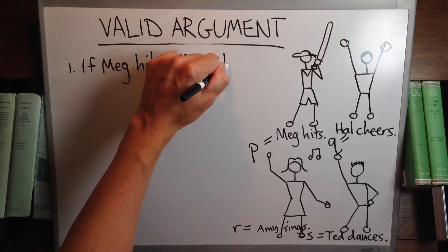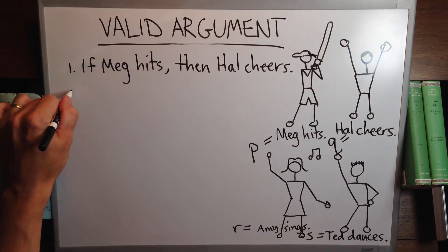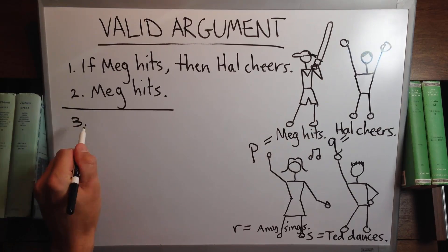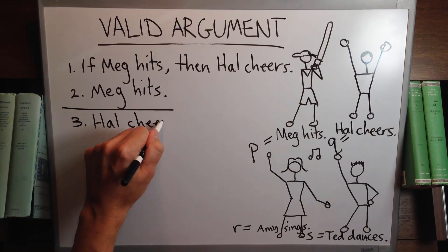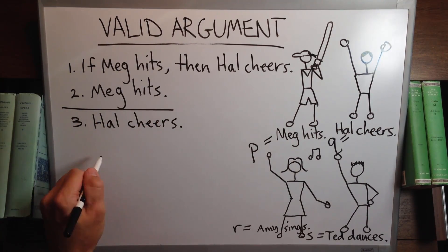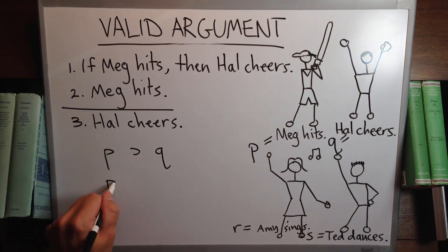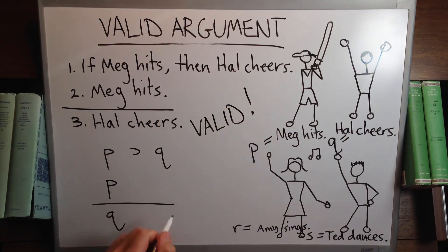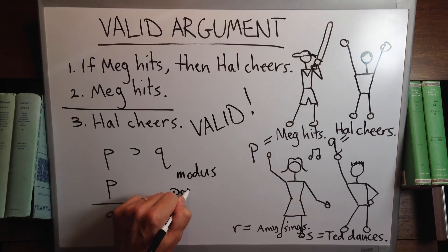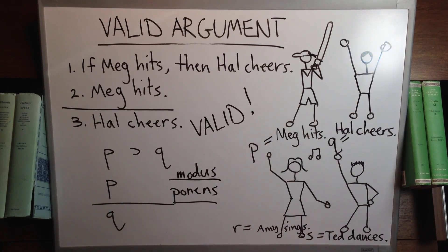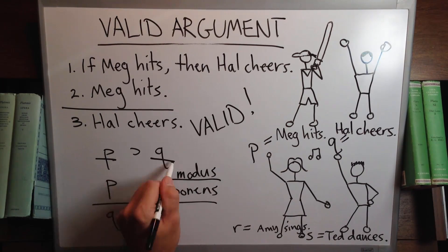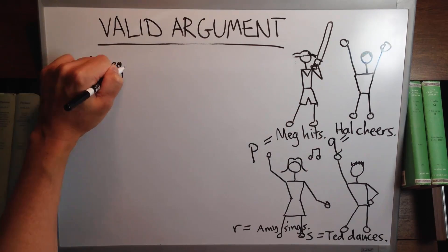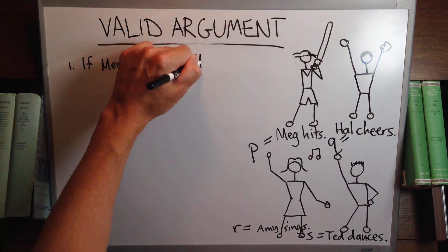The first form of valid argument goes like this. Let's say the first premise is 'if Meg hits then Hal cheers,' and then you assert that Meg hits. Well, then you can infer that Hal cheers. If P then Q; P; therefore Q. It's a valid form called modus ponens. You assert that P, which is sufficient for Q, and then infer Q.